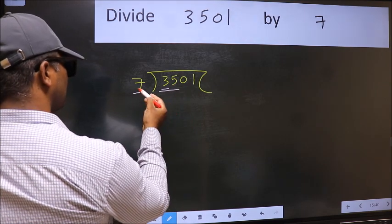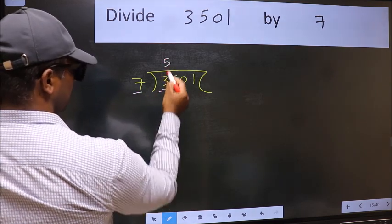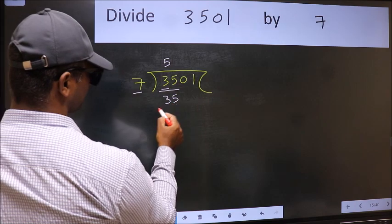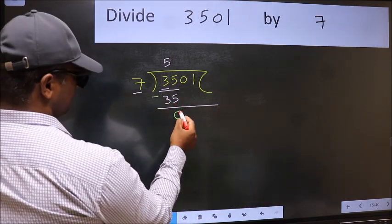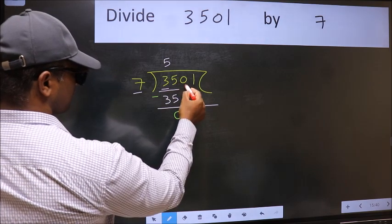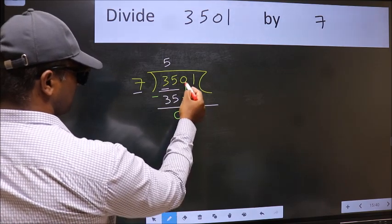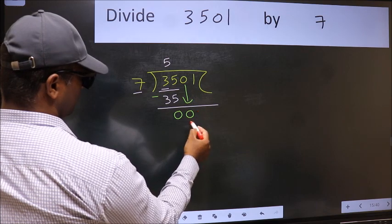When do we get 35 in the 7 table? 7 fives 35. Now we should subtract. We get 0. After this, bring down the beside number. So, 0 down.